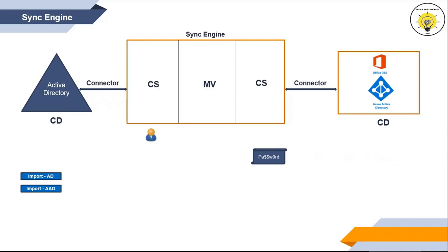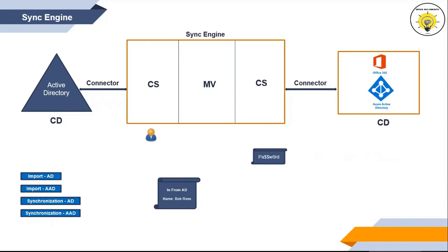The third Sync Cycle is Synchronization Active Directory. During this cycle, the changes done in Active Directory are presented within Metaverse and updated within the Active Directory connector space. The fourth Sync Cycle is Synchronization AAD or Synchronization Azure Active Directory. During this cycle, changes going to be exported to Azure Active Directory are presented within Metaverse and updated within the Azure Active Directory connector space. In from AD and Out to AAD are the synchronization rule types. In from AD rules decide which objects and attributes are picked from Active Directory, and Out to AAD rules export the changes to Azure Active Directory as per their conditions.